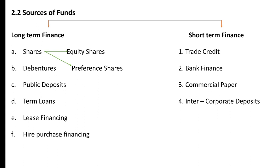Third is commercial paper, which originated in the USA and is now used in developed and developing nations. Fourth is public deposits — unsecured public deposits can be issued by firms to raise working capital. The term of such deposits is normally six months to three years.